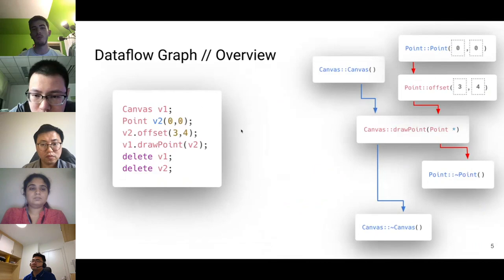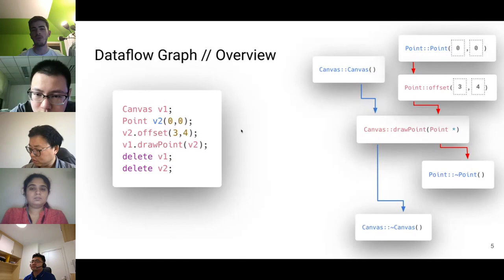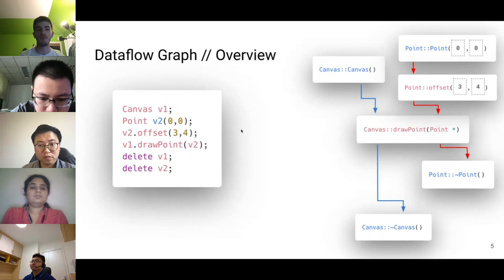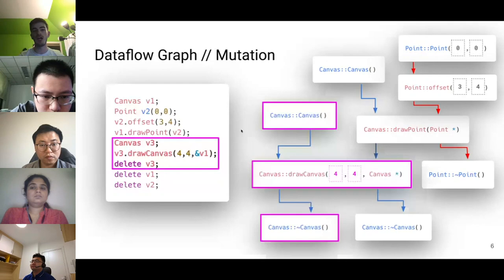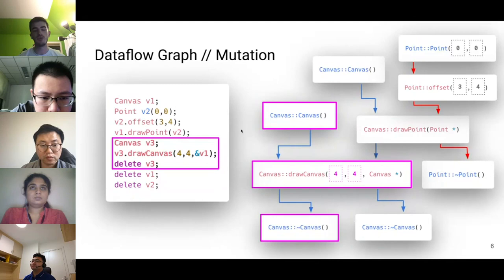An example of a complete data flow graph representing a single API interaction is shown with the graph on the right and equivalent C++ source on the left. All edges are fully connected and all types match. With this representation, we can ensure proper object creation and deletion — for example, invoking the canvas constructor before canvas draw point, and invoking the canvas destructor after. This representation also lets us perform high-level structure-aware mutations on the API sequence itself: for example, adding three new function calls properly linked into the graph. With GraphFuzz, we can perform this mutation and then execute the resulting API graph without recompiling using a process called dynamic execution, letting us very efficiently mutate and test new API interactions.